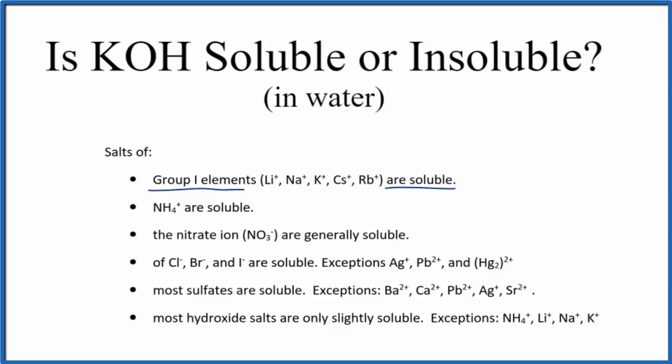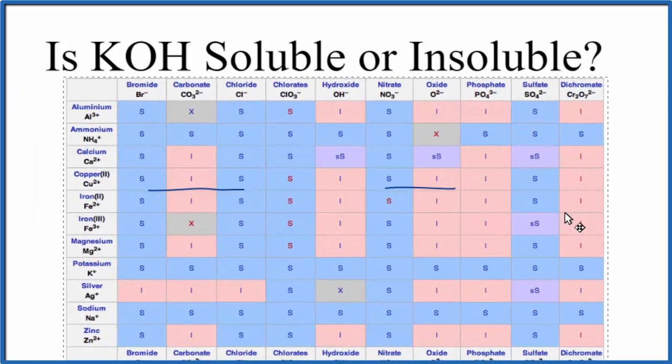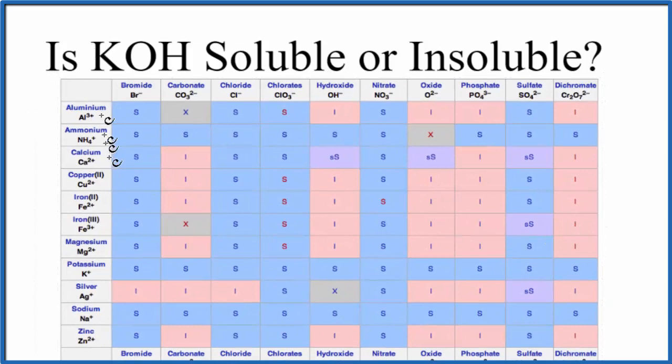We can also take and look at the solubility chart. So here's a solubility chart. And we go down, these are the positive ions, the cations, and potassium is right here.